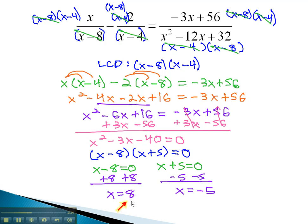However, notice when we plug 8 into the LCD, 8 minus 8 will give us 0 for a factor. The LCD cannot be 0, and so we have to throw this solution out. Checking the negative 5, negative 5 minus 8 is negative 13, and negative 5 minus 4 is negative 9. And so the answer of negative 5 does work, because it does not make the denominator 0.